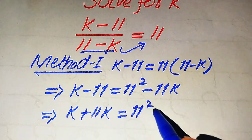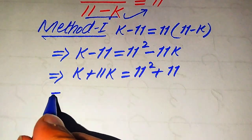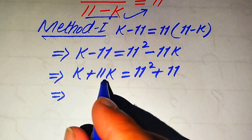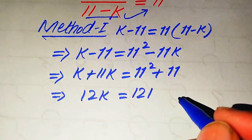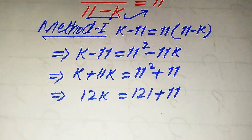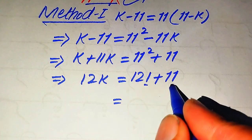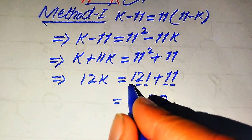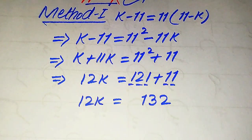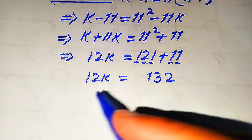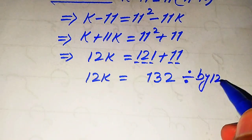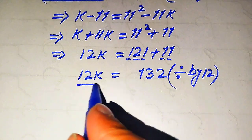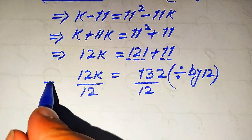After collecting like terms, k plus 11k becomes 12k. We know 11 squared equals 121, so the right-hand side becomes 121 plus 11, which equals 132. Now we have 12k equals 132. To solve for k we divide both sides by 12.